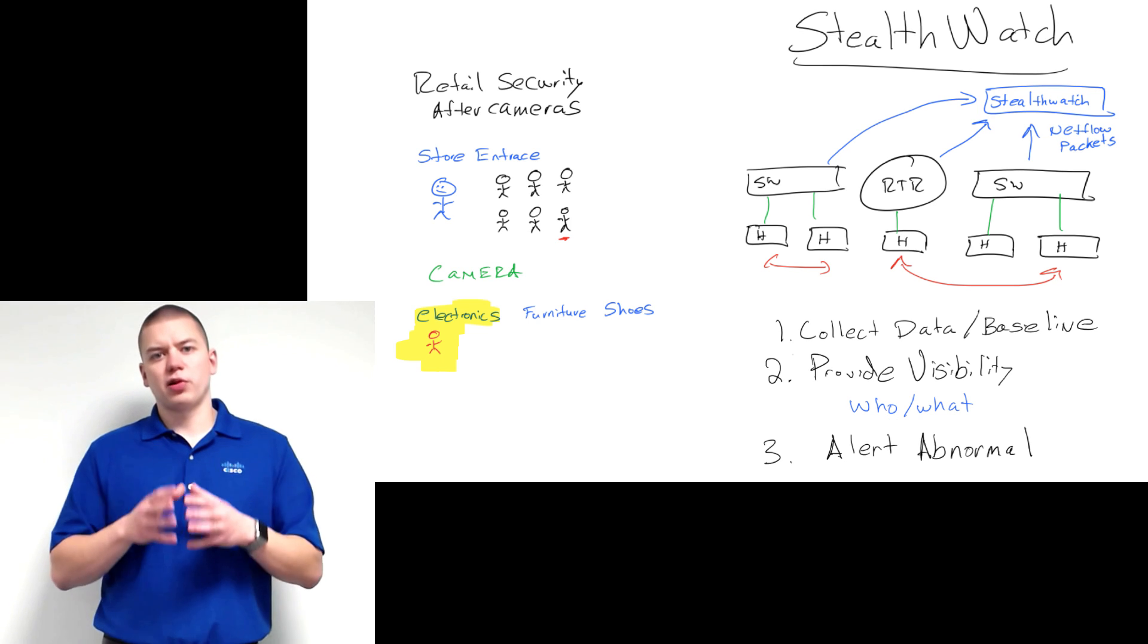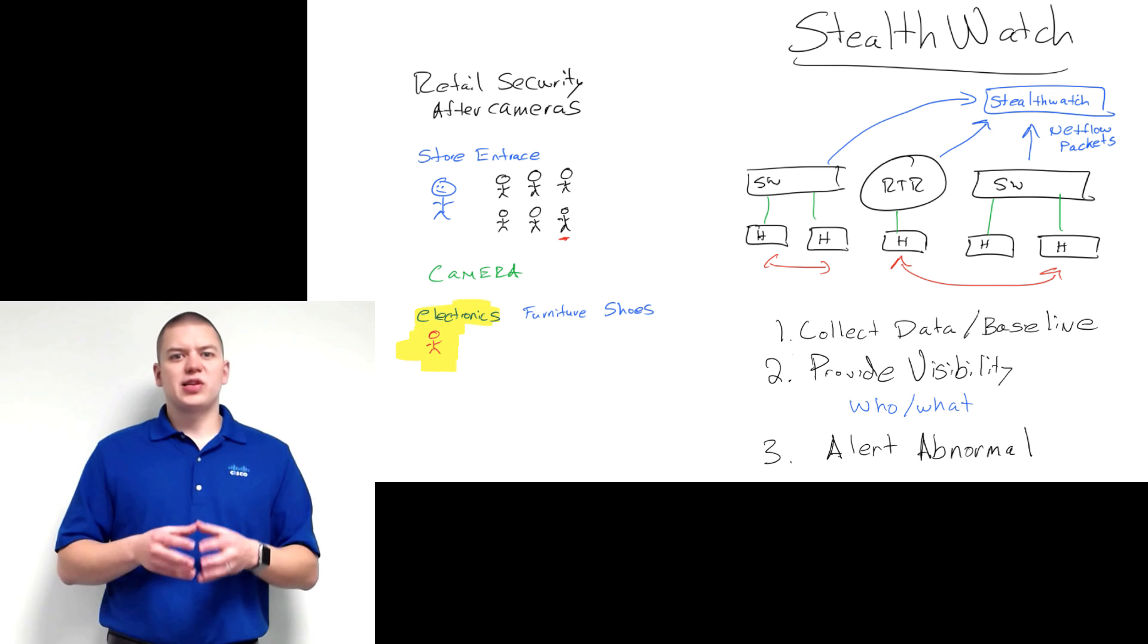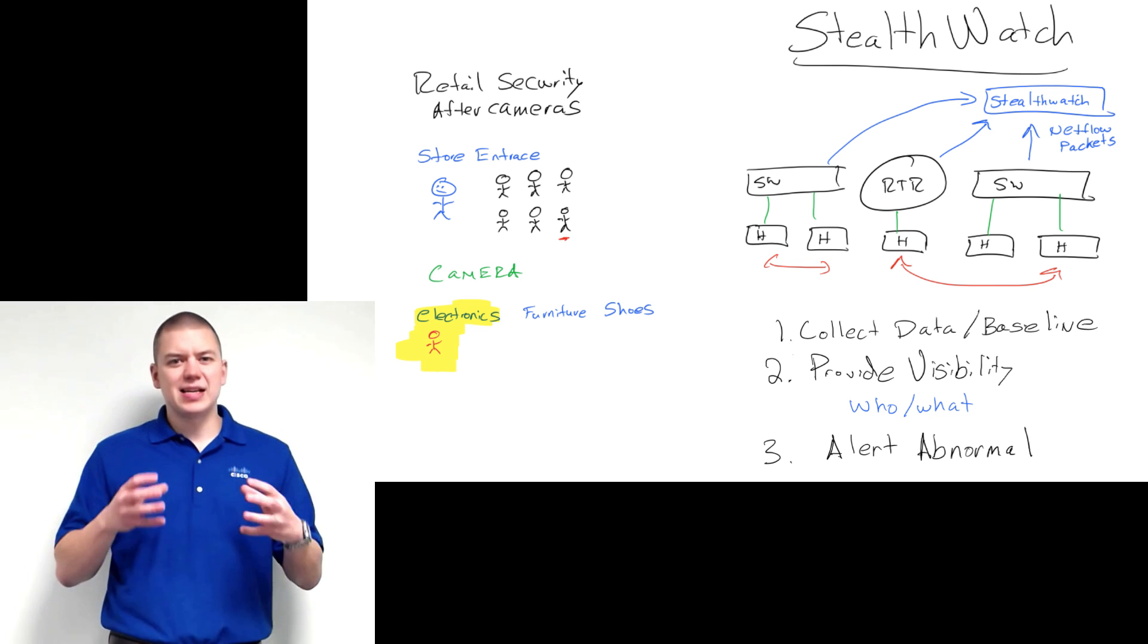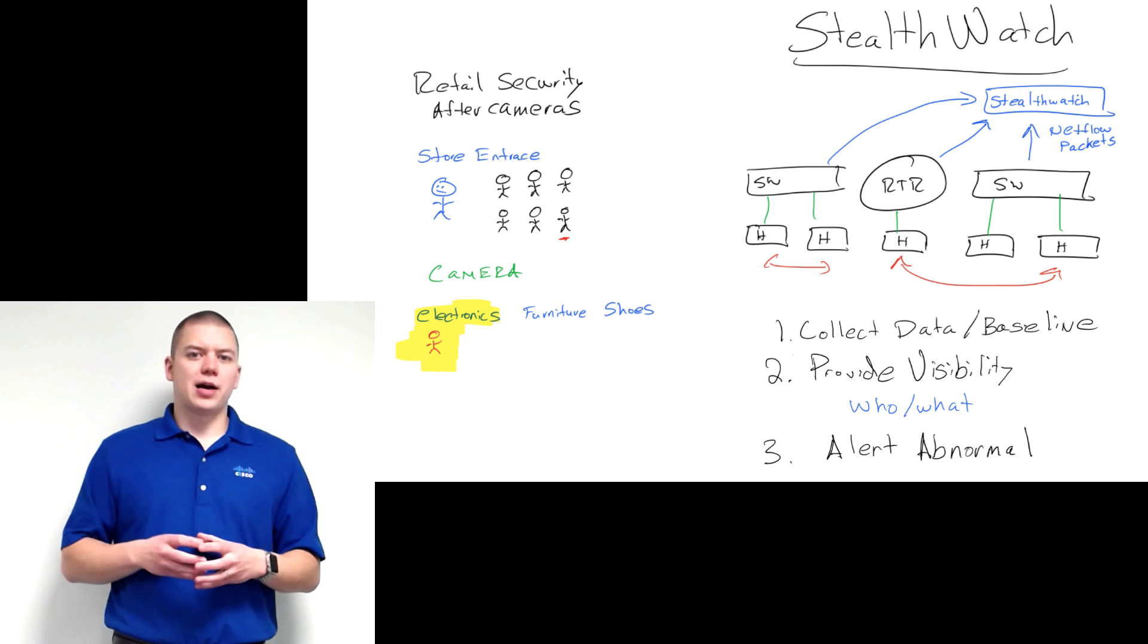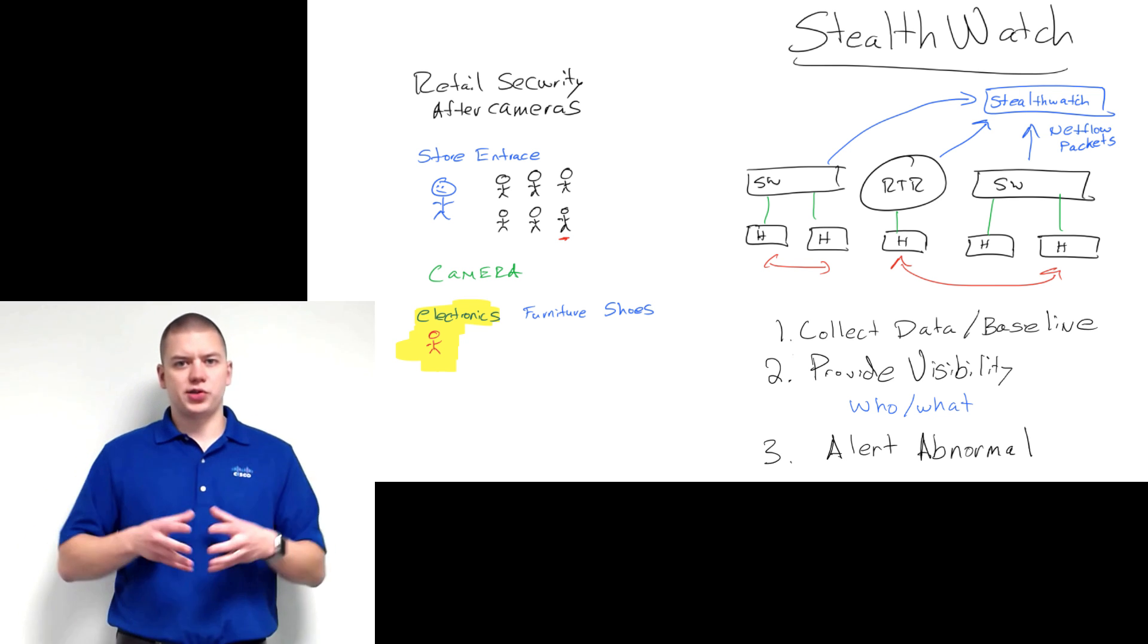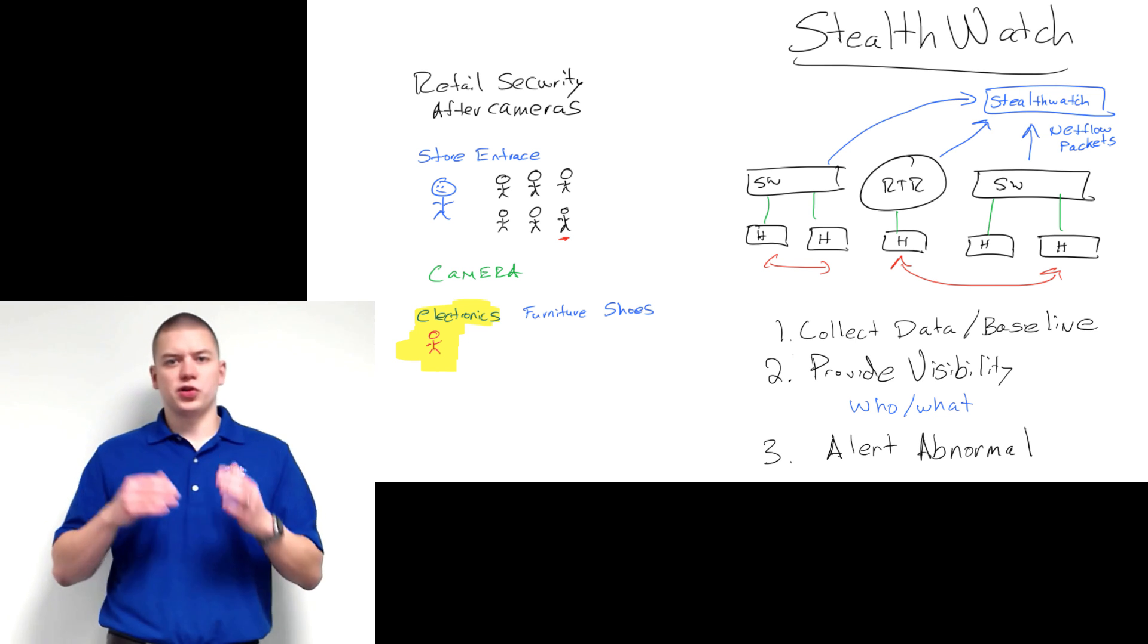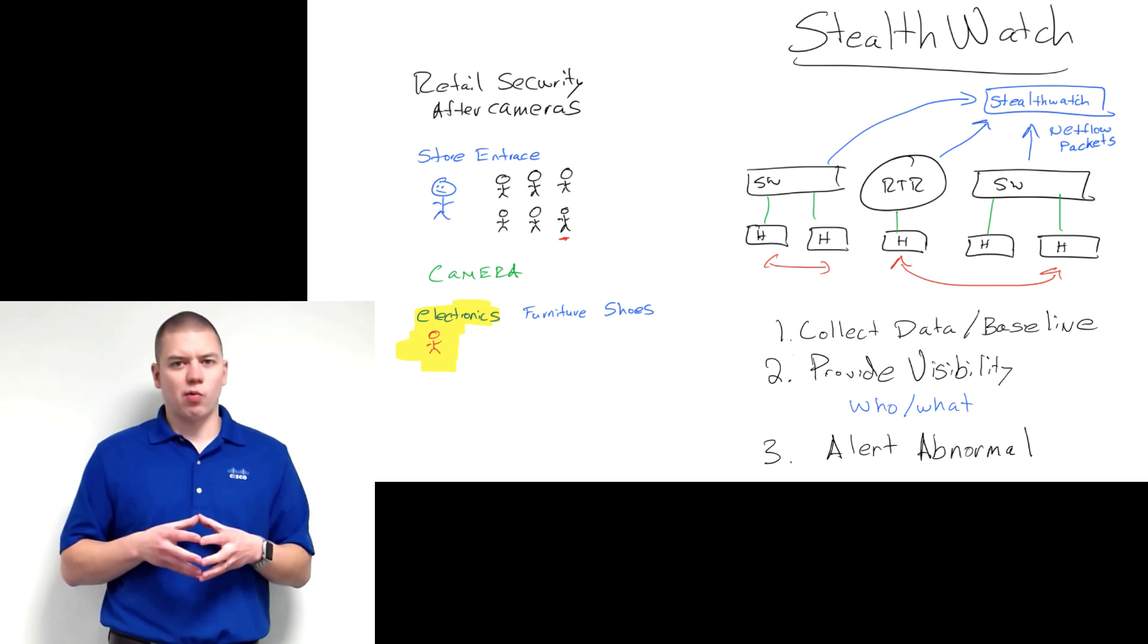Cisco has taken a very similar approach to data security with our solution, StealthWatch. StealthWatch pulls in packet data and NetFlow data, studies it, and then builds a baseline—what is a normal day, week, or month from a network standpoint? It provides deep visibility into what applications, protocols, and users are on the network.